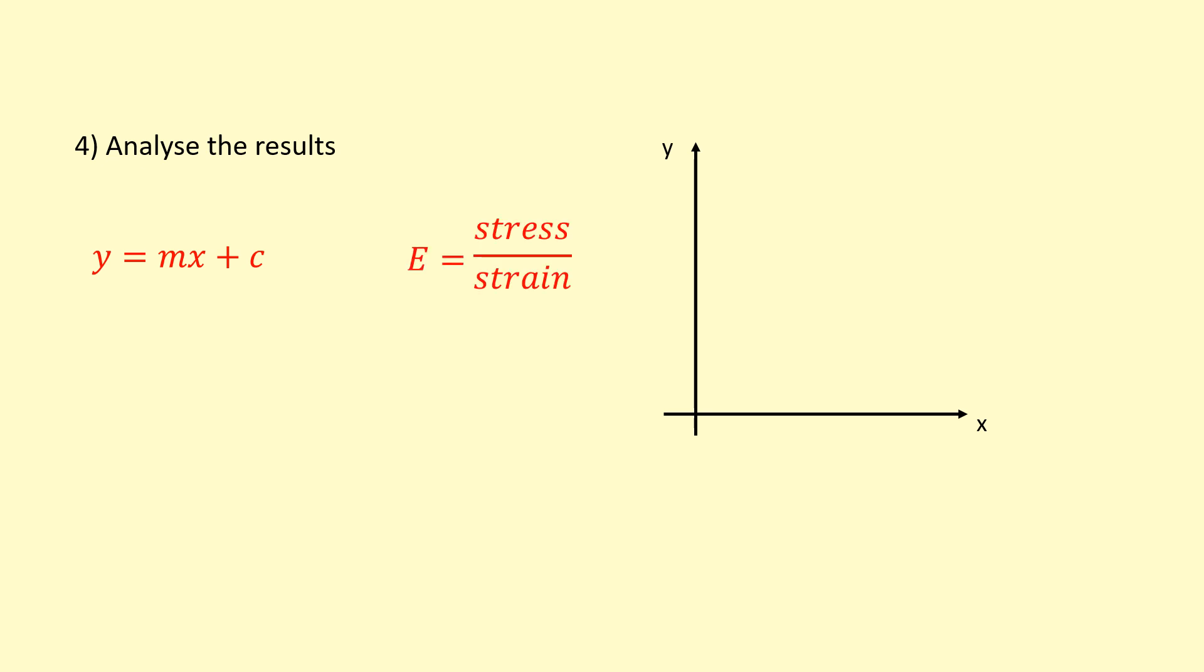We've got Young's modulus is equal to stress over strain. Instead of E, I like to write YM so they don't get mixed up with energy and things like that. Stress is force over the area, strain is change in length over length. So we've got a fraction divided by a fraction. Flip the bottom fraction over and multiply and you get this equation.